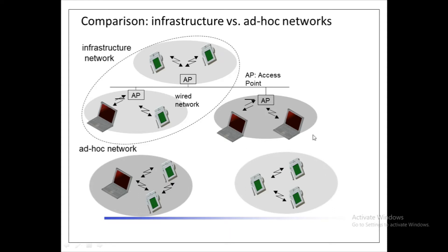This is the wired network, and these are the wireless networks. Two nodes are connected to the first access point, two mobile nodes to the second, and one laptop and one mobile node to the third. In this network, two laptops are connected with the access points.